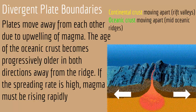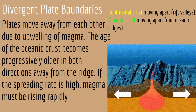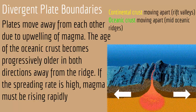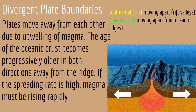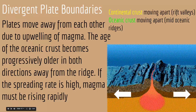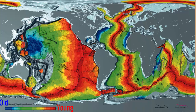We have two types of divergent plate boundaries: either rift valleys, which form from continental crust due to magma coming out under continental crust, or mid-oceanic ridges, which form due to magma coming out under oceanic crust. This animation shows an example of a mid-oceanic ridge because it is in water — it is oceanic crust, and the magma is coming out beneath it.